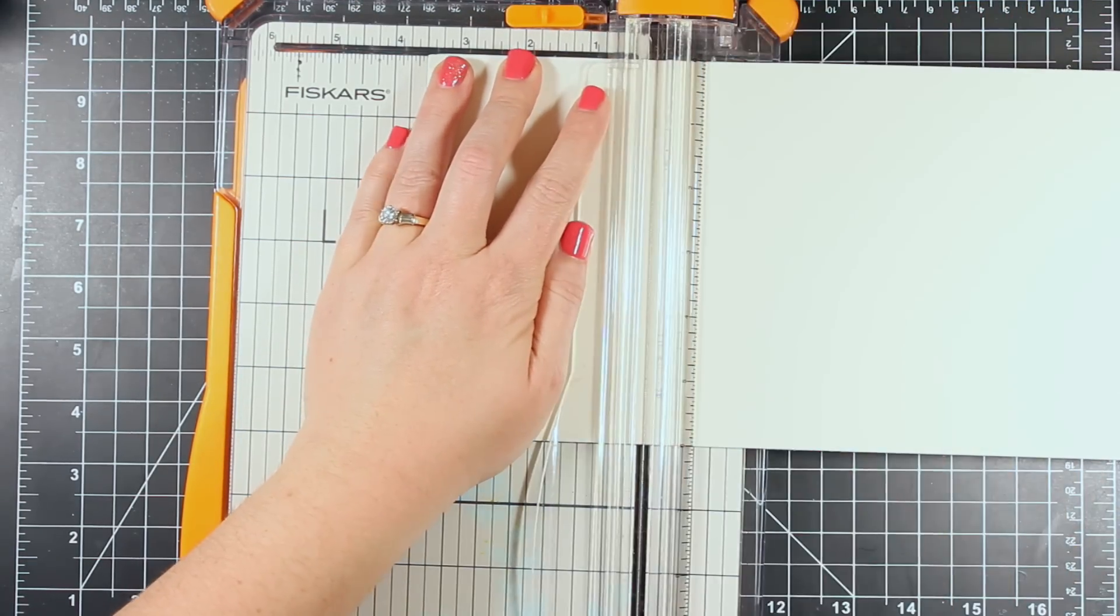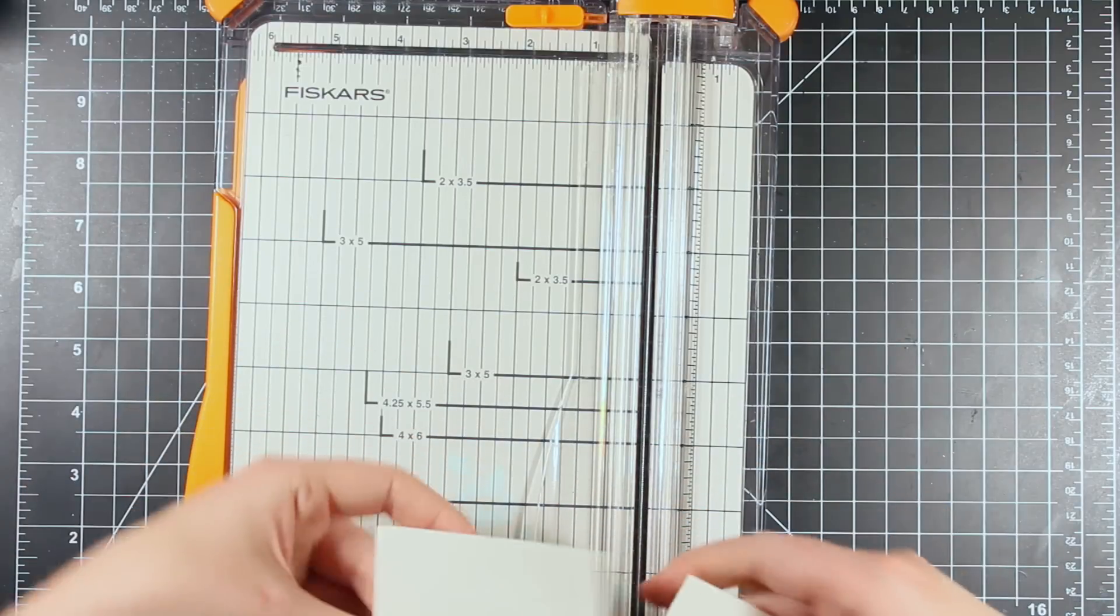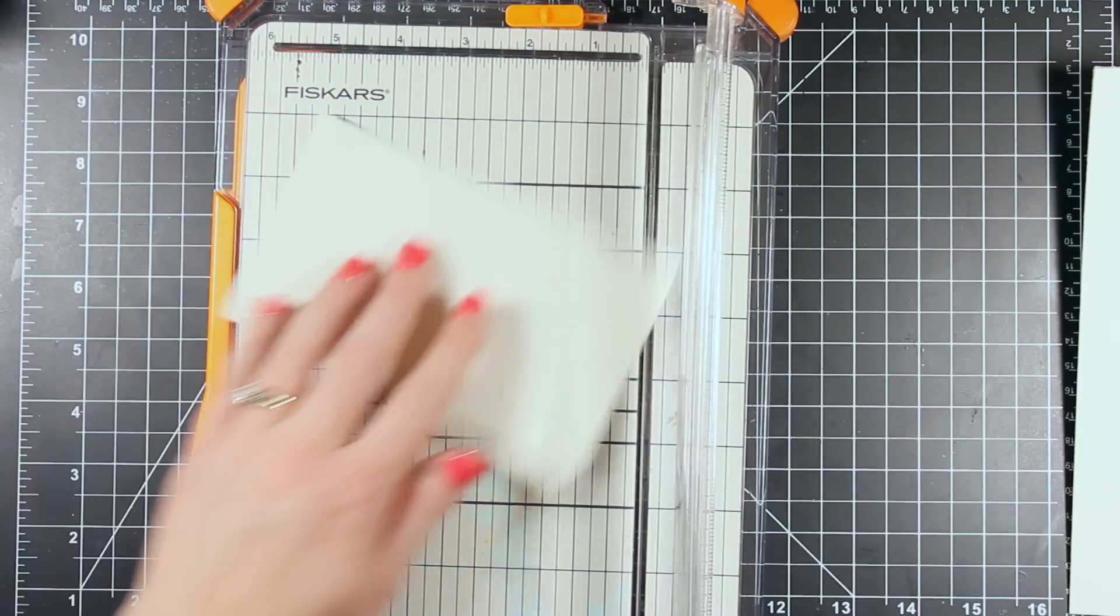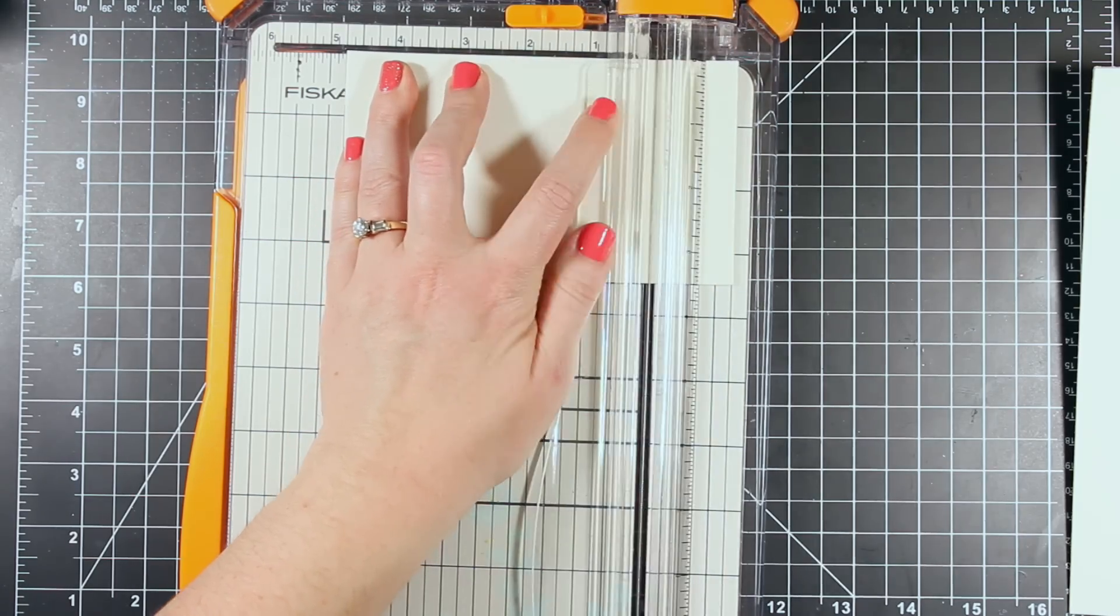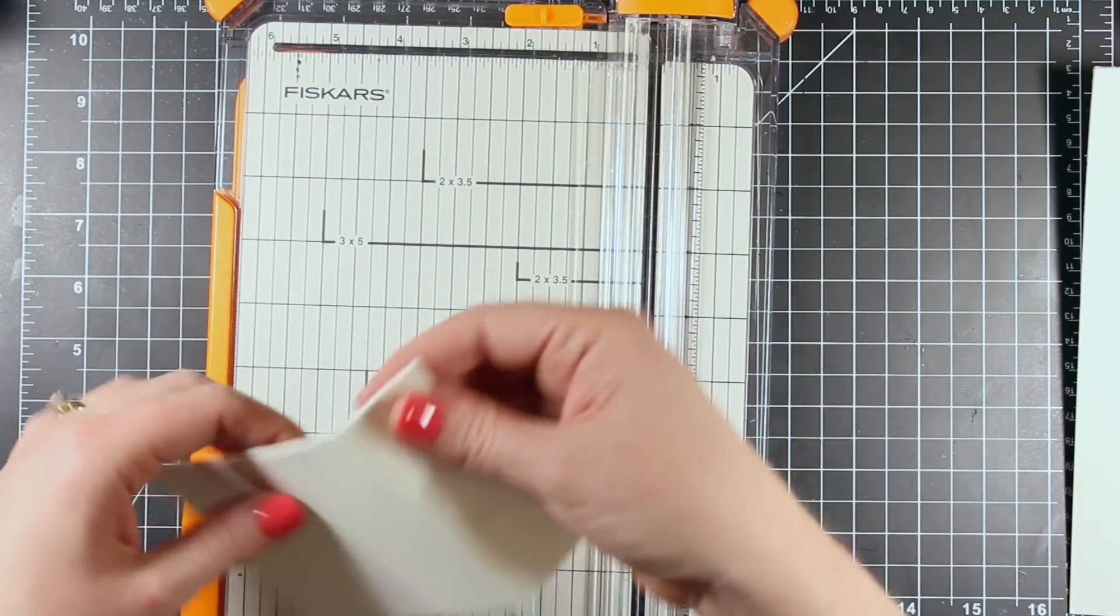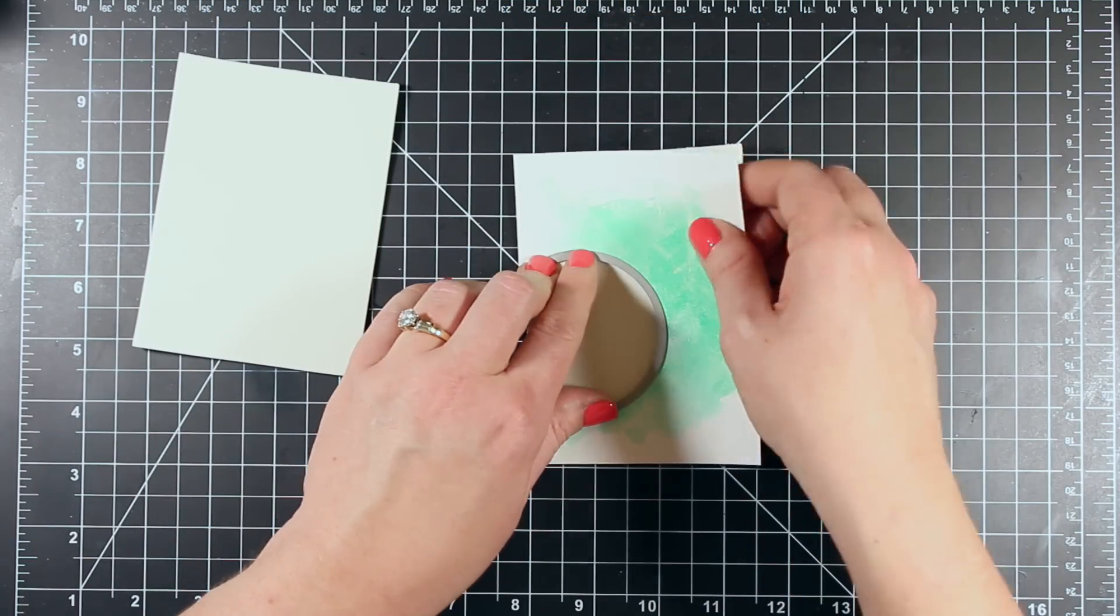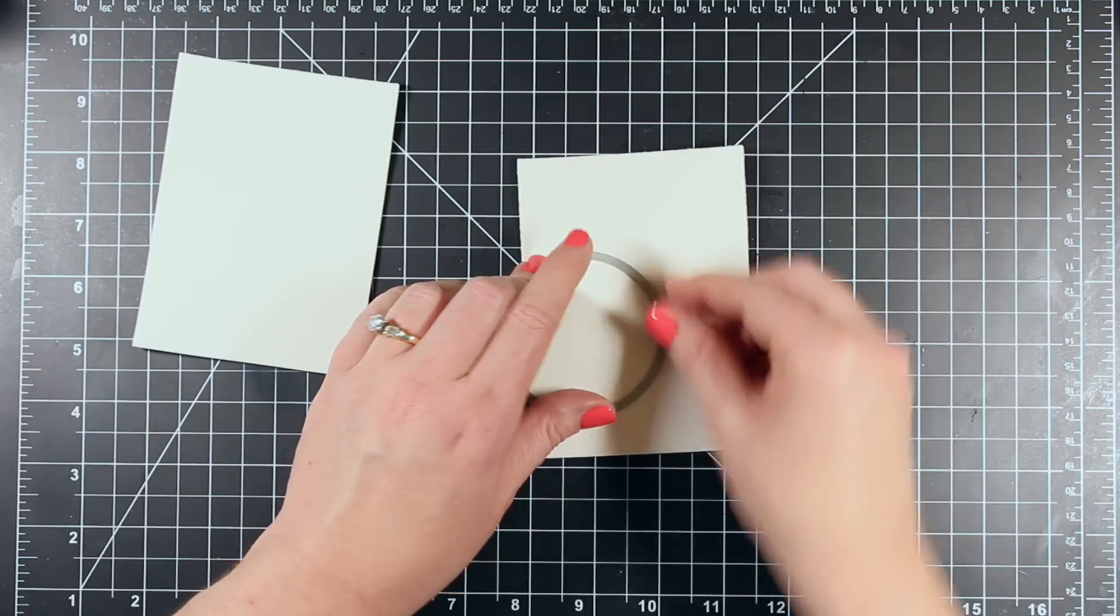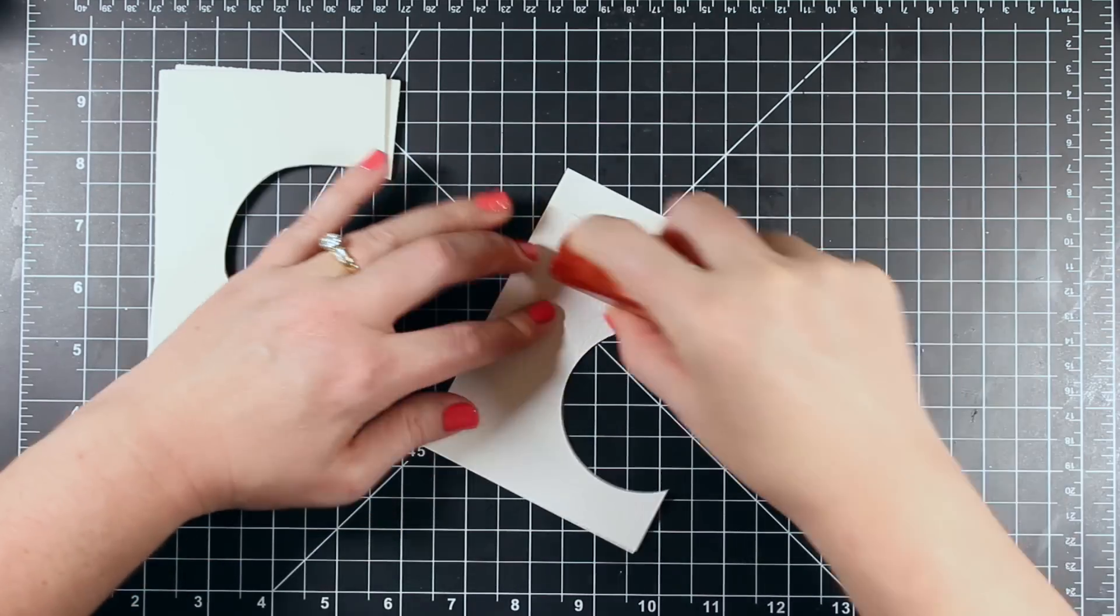Now I'm going to create different levels or layers of these windows. What I'm doing is I'm cutting down some fun foam. This is just white fun foam. You can see when I cut it with my trimmer I can just rip it apart really easily. I cut two of these down to where they're just slightly smaller than my watercolor piece. I'm going to die cut the circles out of these again. So I have two layers of fun foam.